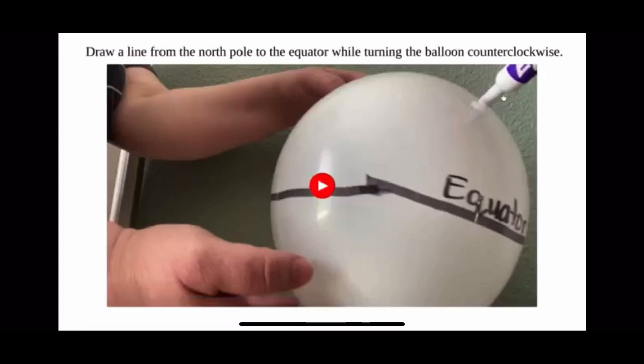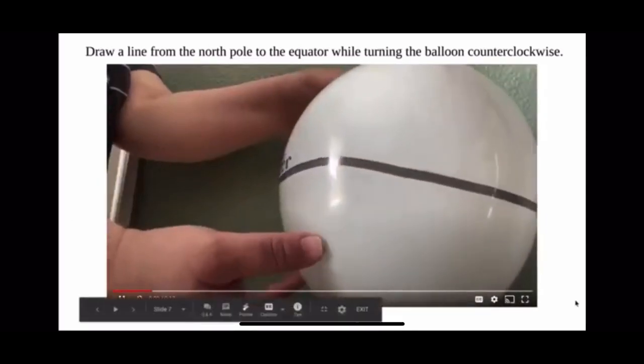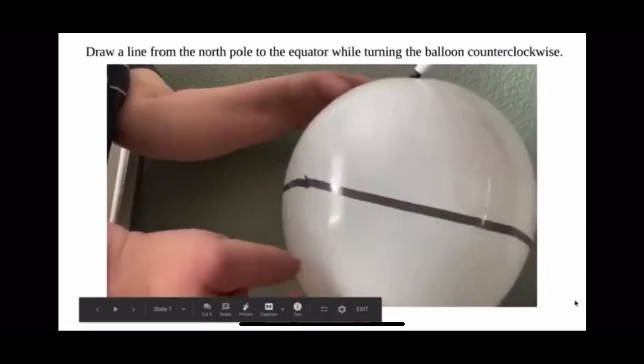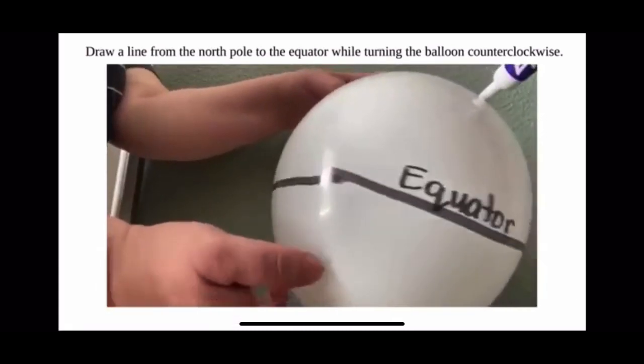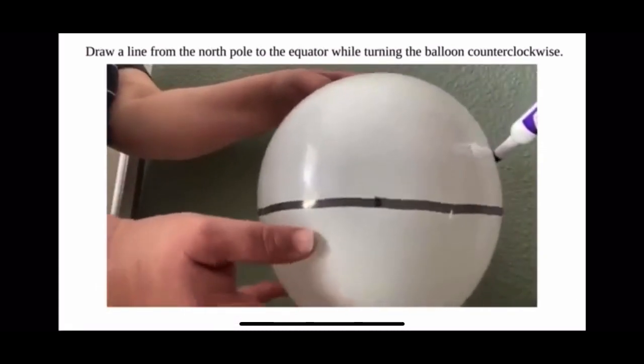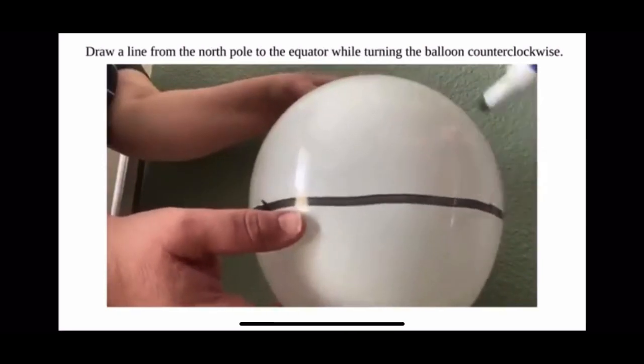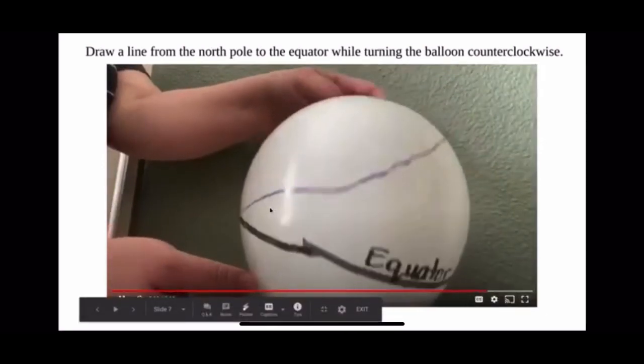So this marker right here represents air traveling from the North Pole to the equator. The balloon is being turned counterclockwise. That is the opposite way of the clocks in our classrooms.